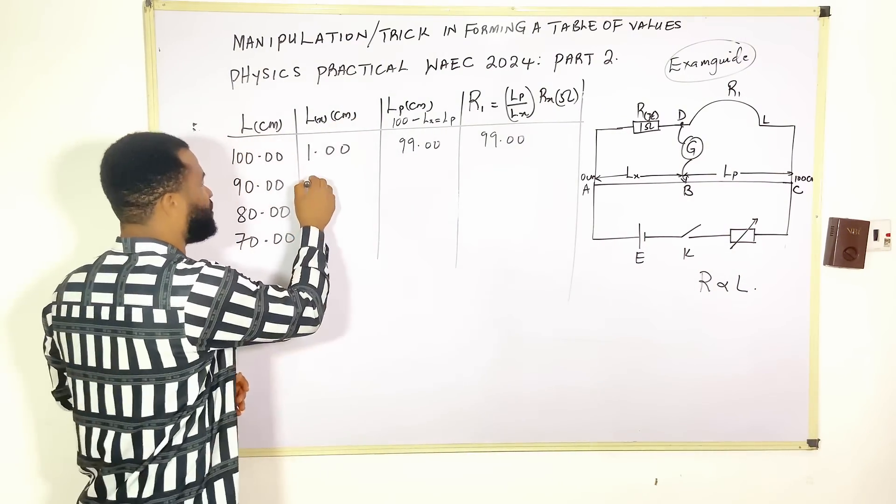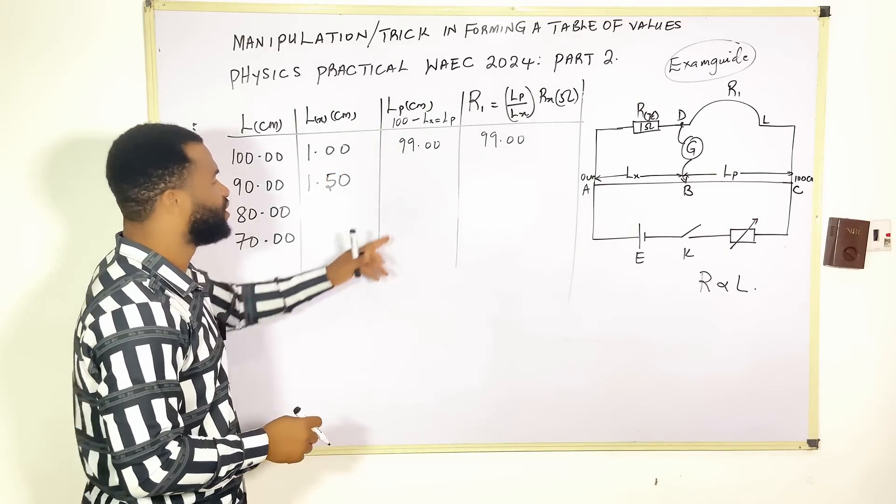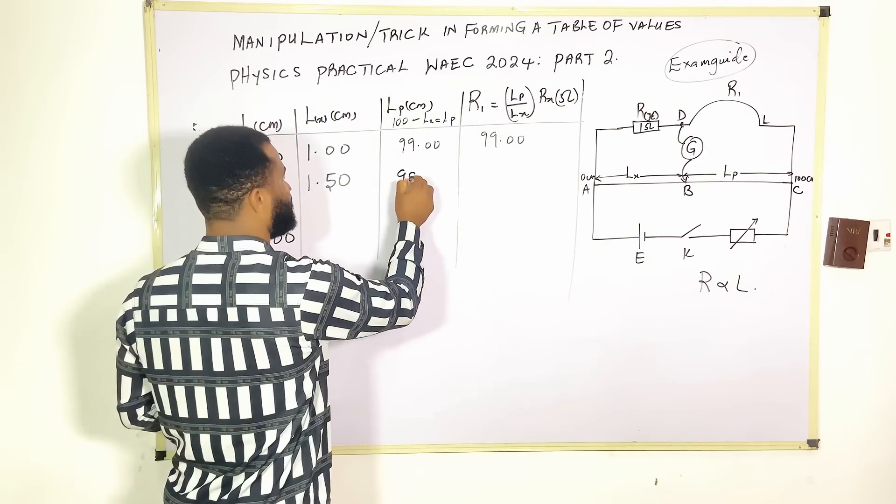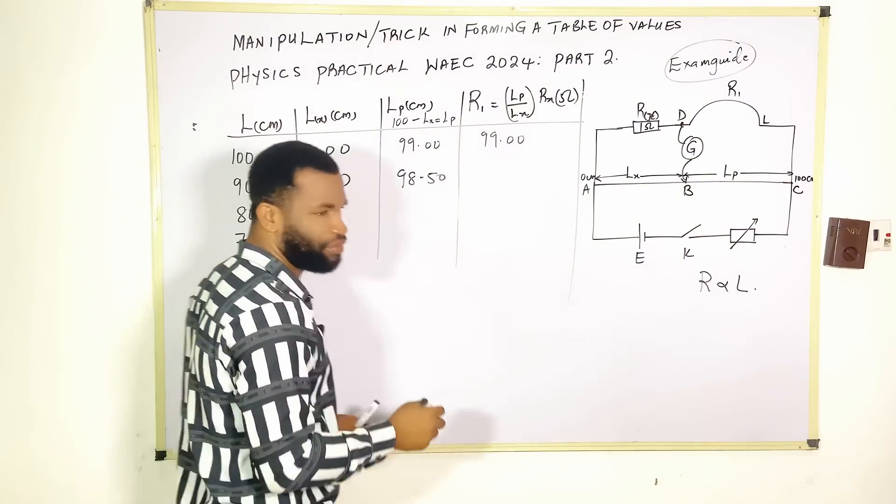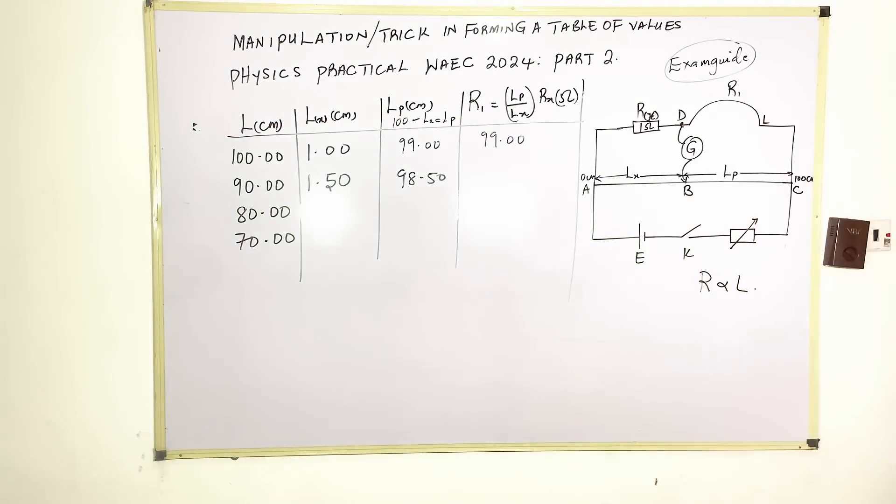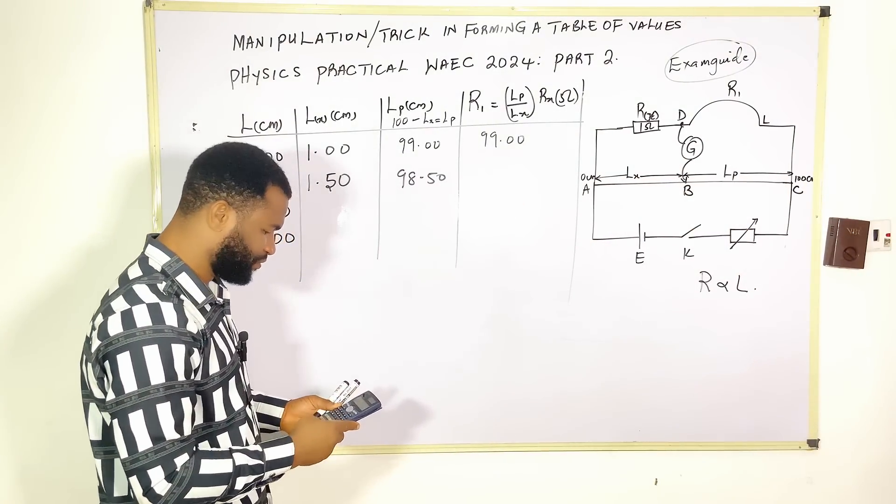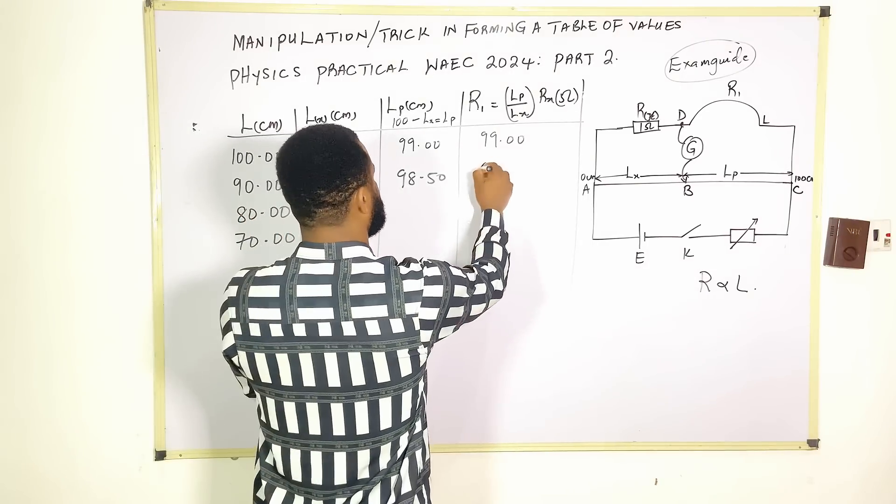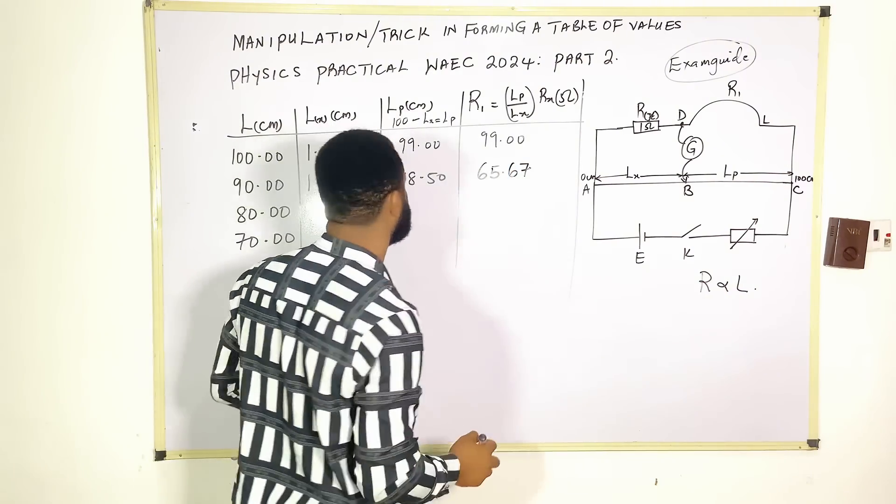Remember this has to increase. The first one was 1. The next one I'm going to have is 1.50, so this is going to be 98.50. So 98.5 divided by 1.5, I have 65.67.